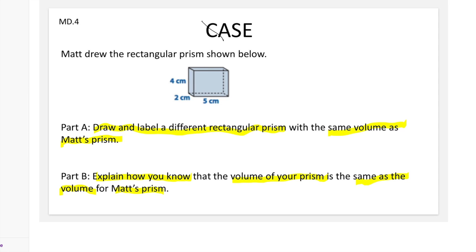Next, I need to solve Part A. I need to find the volume of Matt's prism before I figure out the volume of another rectangular prism. So first, volume equals length times width times height. 5 cm would be the length, 2 cm would be the width, and 4 cm would be the height.